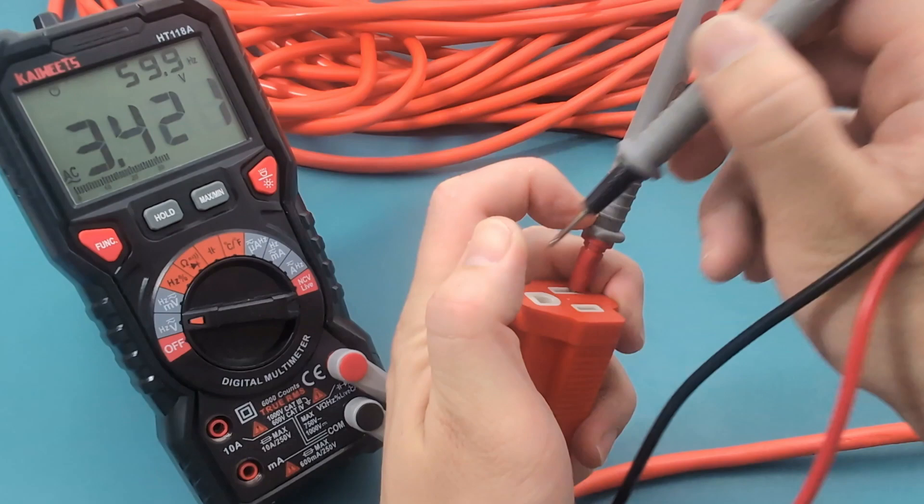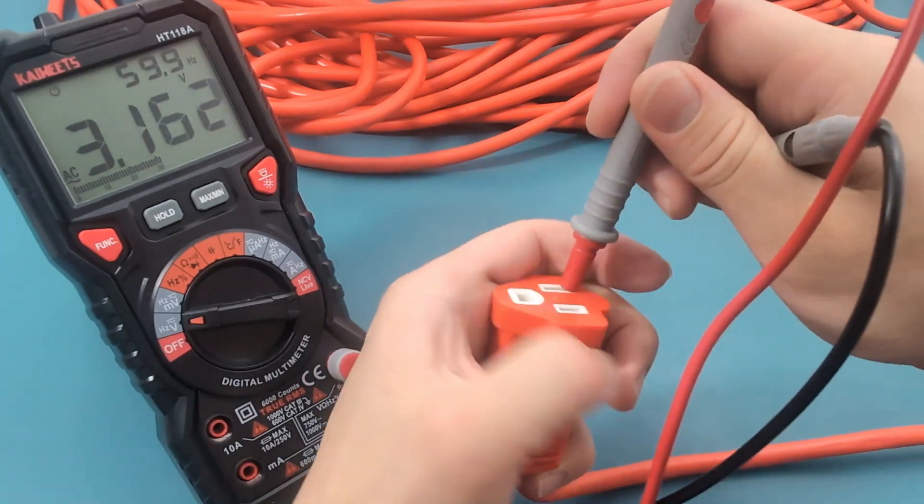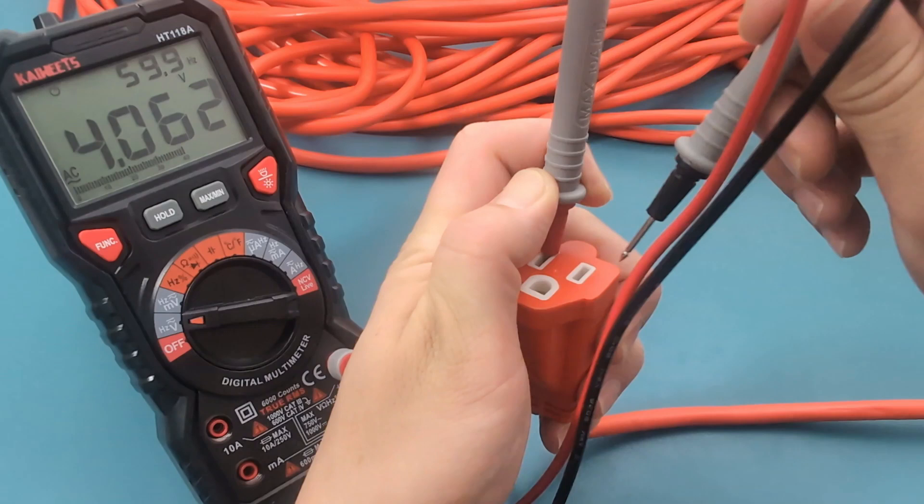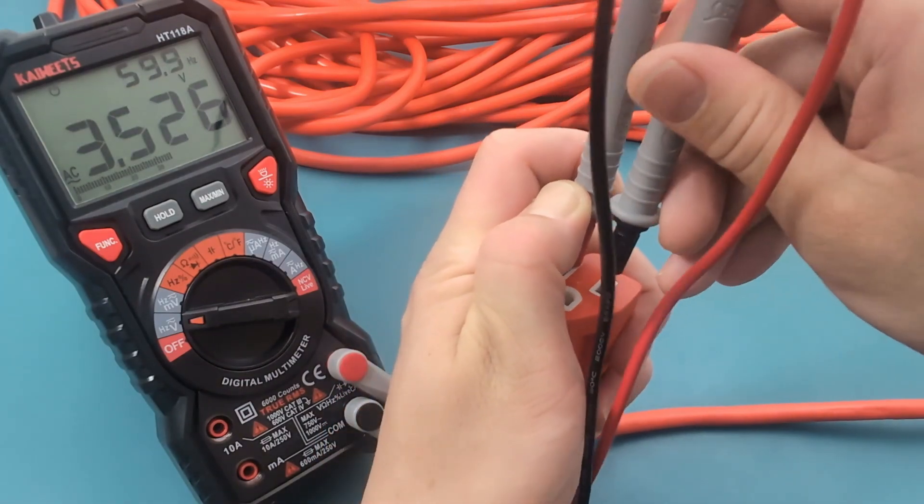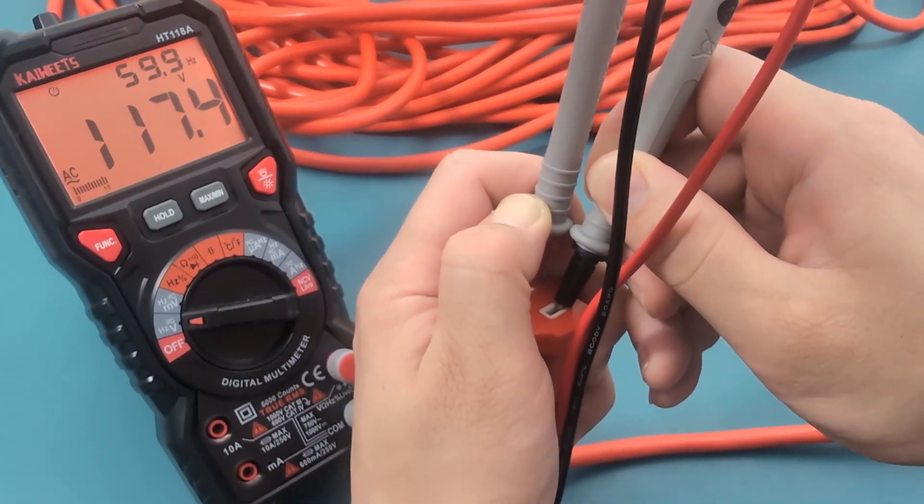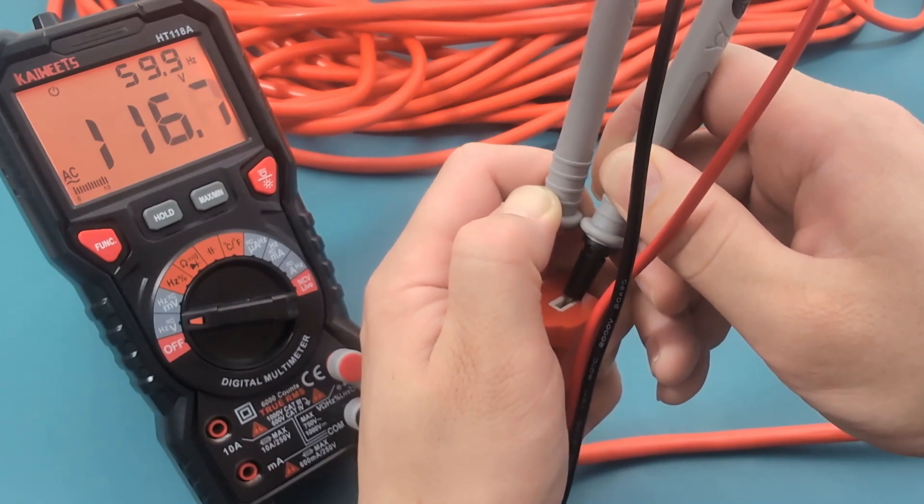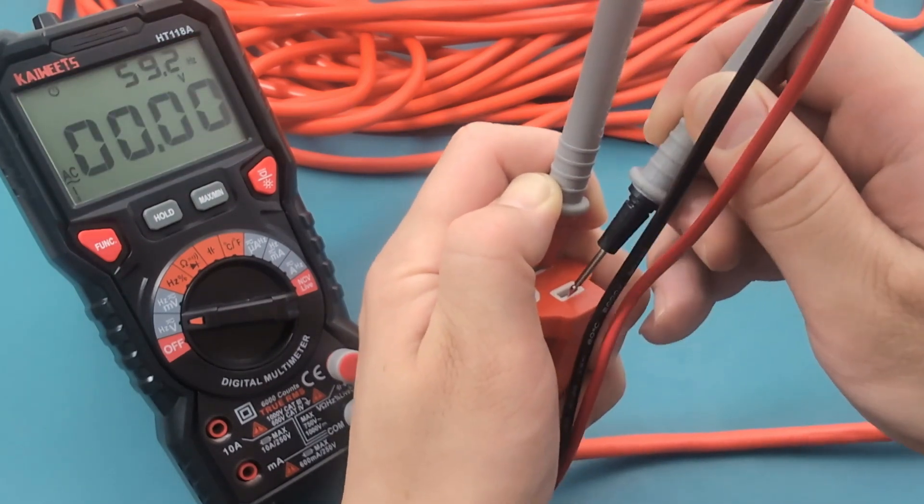Move the black probe from the ground slot to the hot slot. The reading shows about 117 volts, which is typical for household outlets. Consistent readings confirm that your extension cord is functioning correctly.